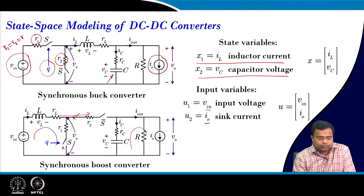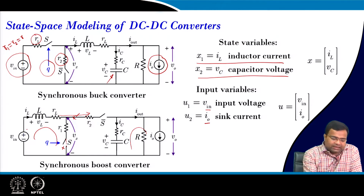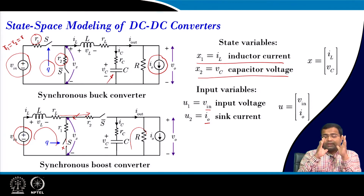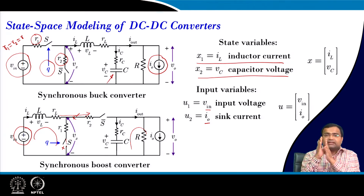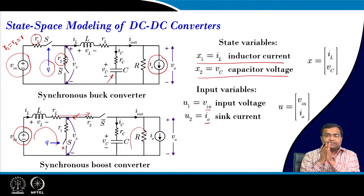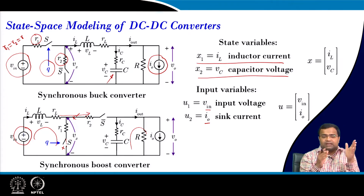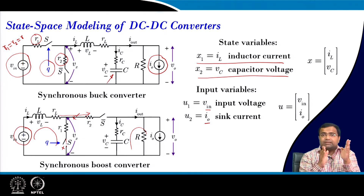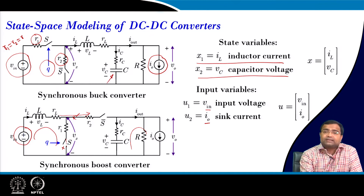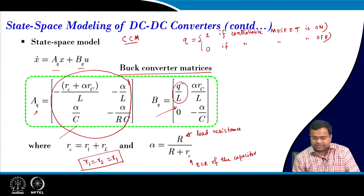Similarly, if you go to the boost converter, you see the input voltage is always connected in CCM. So the B matrix will not have such a fundamentally different equation associated with the input voltage. But in the boost converter, the A matrix will be different — A matrix is heavily dependent on Q.